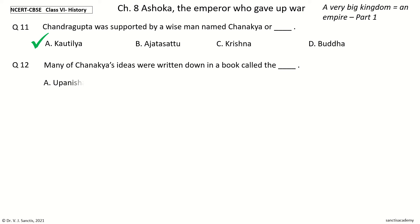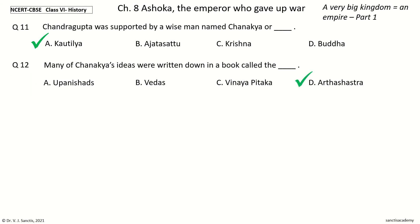Question 12 (last question): Many of Chanakya's ideas were written down in a book called The — blank. The options are: Upanishads, Vedas, Vinaya Pitaka, Arthashastra. The answer is Arthashastra. So many of Chanakya's ideas were written down in a book called The Arthashastra.